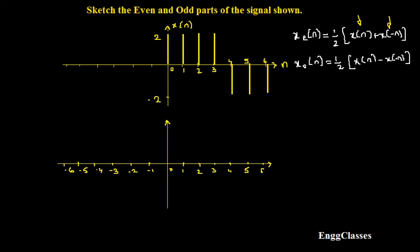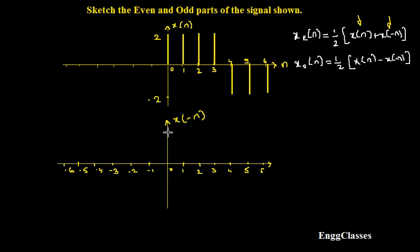Let me first consider sketching x(-n). I said x(-n) is nothing but the reflected version of x(n). It's as if you take a mirror and place it along the vertical axis, so whatever you get is the reflected version. So I need to reflect this along the vertical axis to get x(-n).